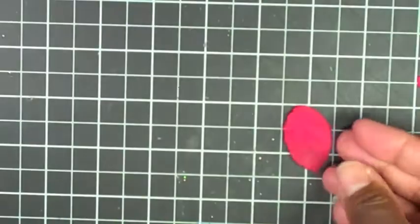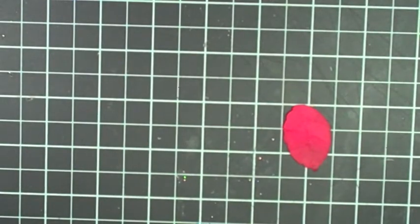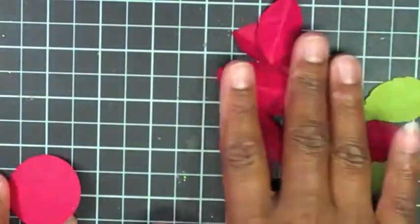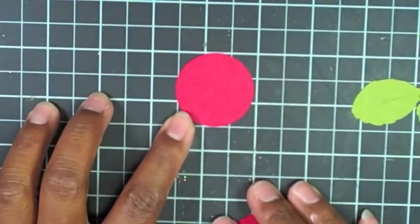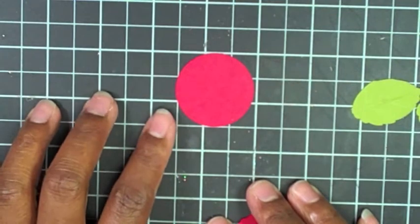So with the magic of video I have 12 red and three green and I also punched out a one and a half inch circle.